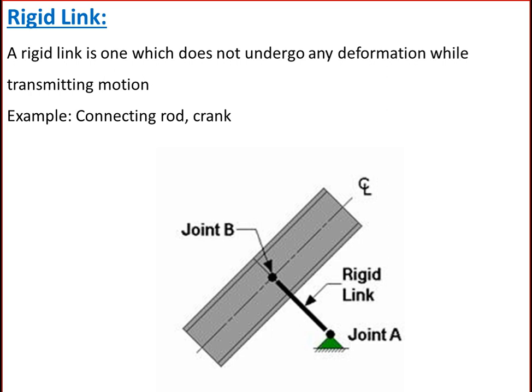The first type is a rigid link. A rigid link is one which does not undergo any deformation while transmitting motion. Strictly speaking, rigid links do not exist; however, as the deformation of a connecting rod, crank, etc., of a reciprocating steam engine is not appreciable, they can be considered as rigid links.